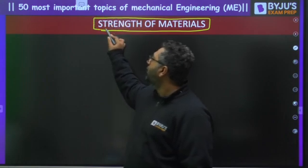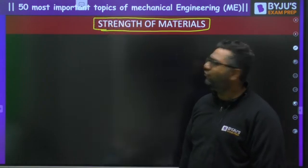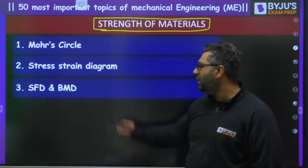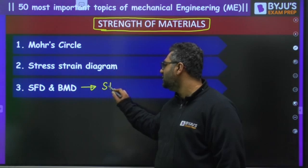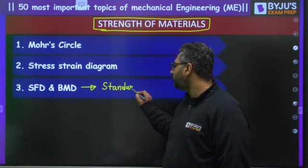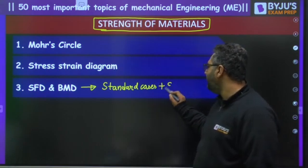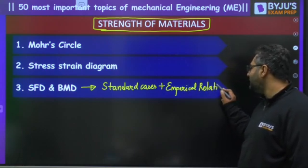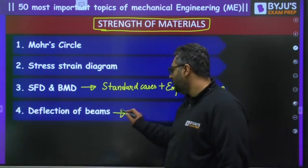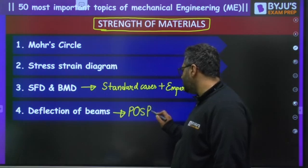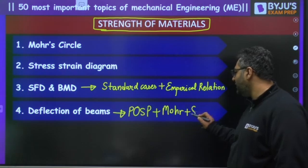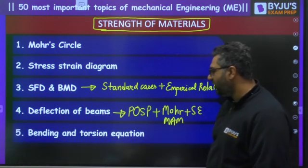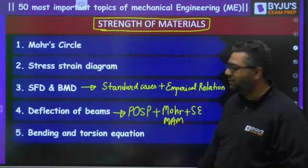For Strength of Materials, the very first topic — your favorite and my favorite — is Mohr's Circle for sure. Then we have the stress-strain diagram, then SFD and BMD where you need to go for standard cases plus empirical relations. For deflection of beams, we need to go for the principle of superposition, Mohr's moment area method, plus strain energy — only these three methods are enough. Then bending and torsional equations — just the equations, nothing more than that.